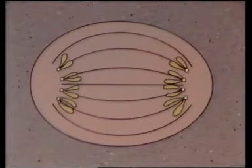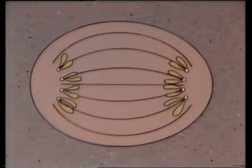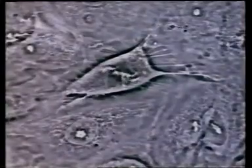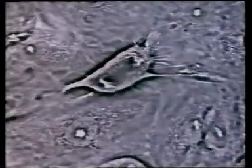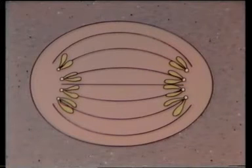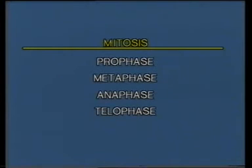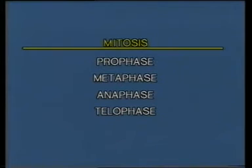Now that the paired chromatids have separated, each is referred to as a chromosome. In the final stage, telophase, it is really a continuous process with no breaks between each phase. Watch mitosis again at two different speeds. In the slower version, the numbers in the bottom right-hand corner of the frame are to be used in identifying the different mitotic phases.